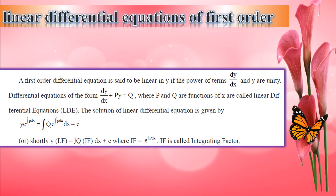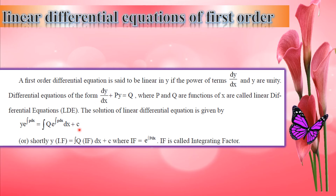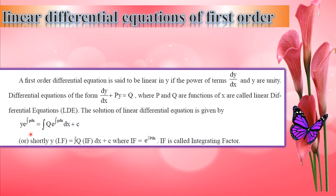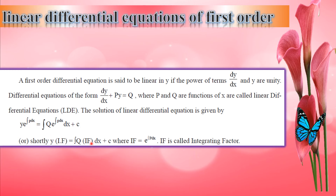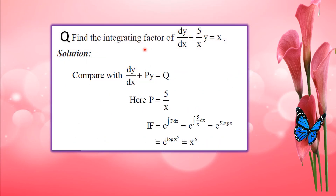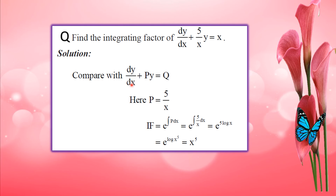Linear differential equation of first order: the standard form is dy by dx plus Py equals Q. The solution is y times e raised to integral of P dx equals integral of Q times e raised to integral of P dx, plus c. For example, find the integrating factor of dy by dx plus 5 by x times y equals x. Here P equals 5 by x and Q equals x.